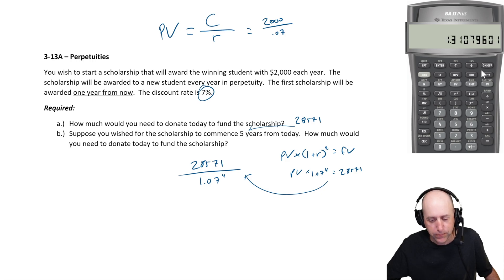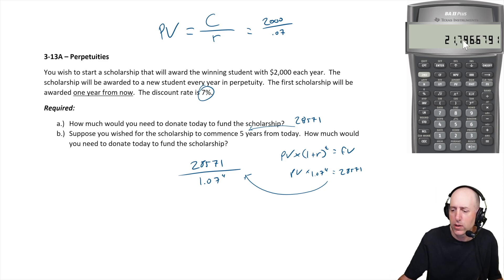Is 1.31. I'm gonna go one over x times 28,571 to do the math there. Oh no, I messed up. 1.07 to the four, one over x times 28,571. I wonder what I clicked wrong in my calculator there. There we go: 21,797.